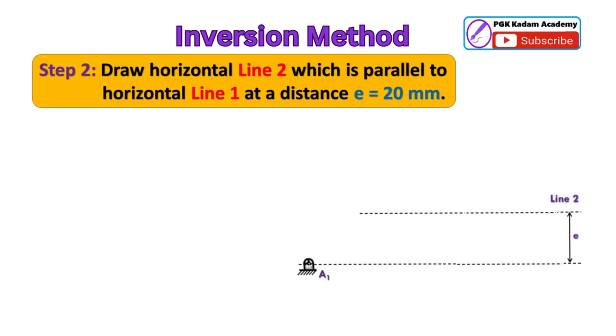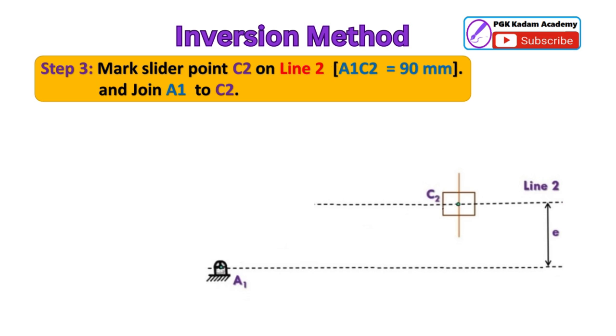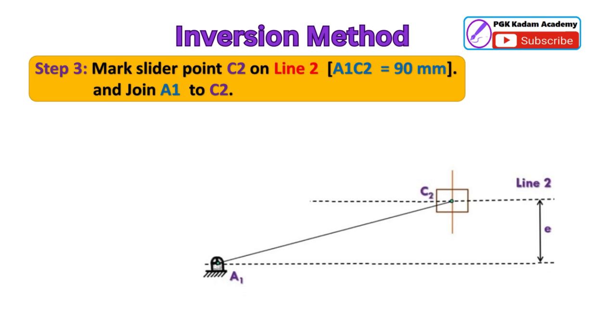Step 3: Mark slider point C2 on line 2, meaning the distance between A1 and C2 is equal to 90 mm. Then join A1 to C2.